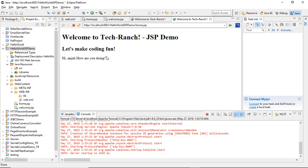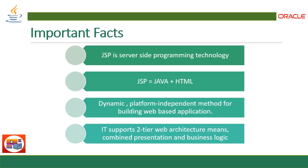This is the execution of JSP. First, important facts about JSP: JSP is a server-side programming technology. JSP equals Java plus HTML. It's a dynamic, platform-independent method for building web-based applications. It supports two-tier web architecture, combining your presentation and business logic together to make the application fast and efficient.